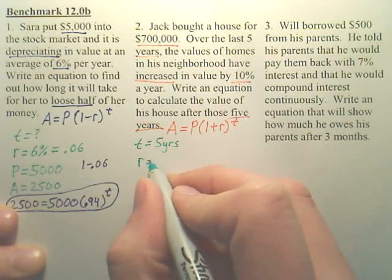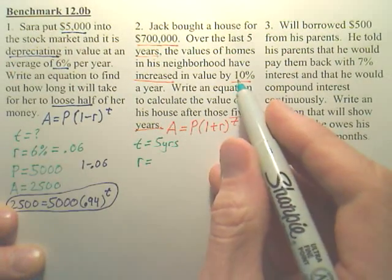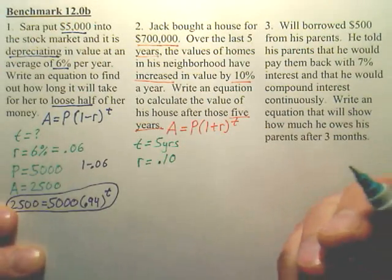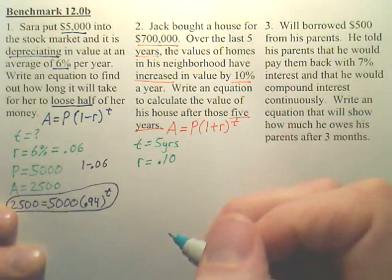Do we know our rate? Yes. It is given. Our rate is point one zero, or point one, which is 10%.